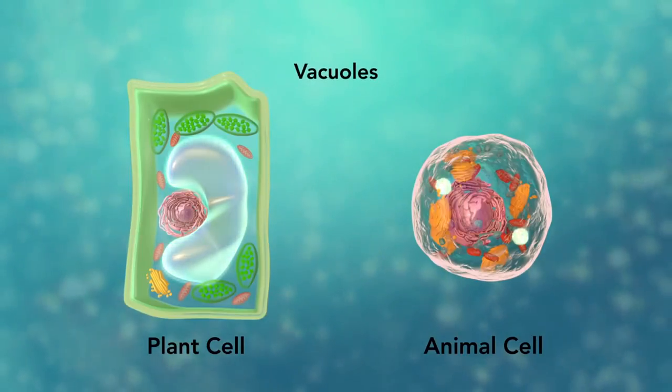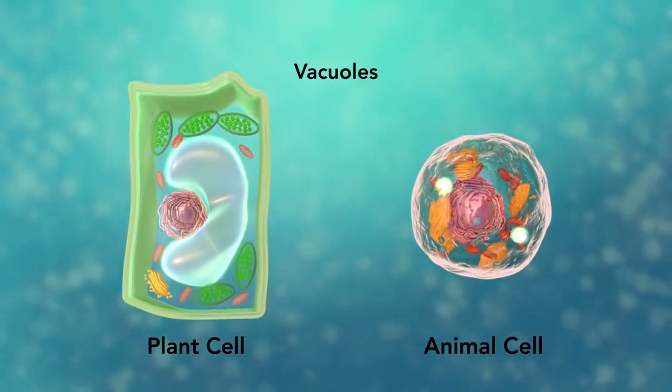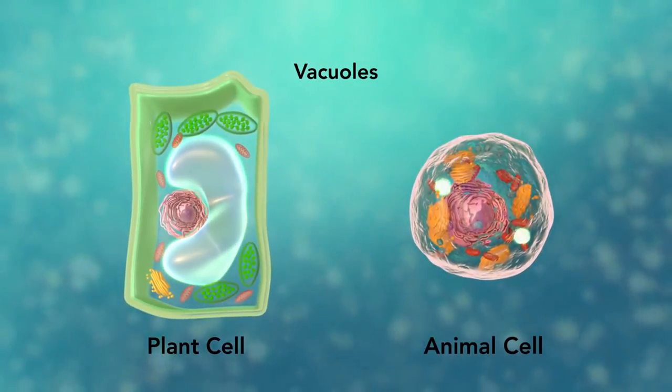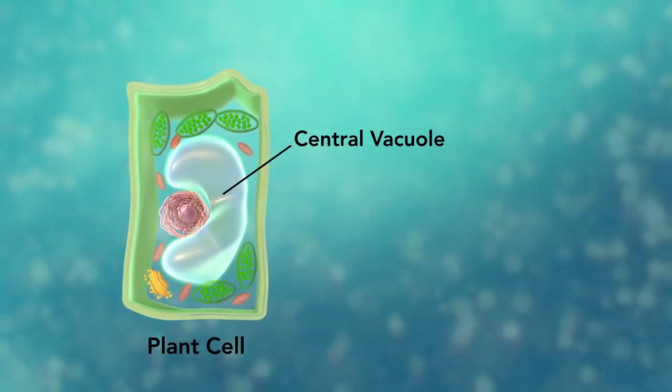Vacuoles are sac-like structures that store different materials. Here, in this plant cell, the central vacuole stores water.